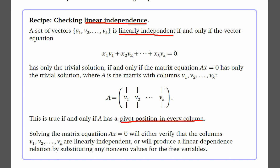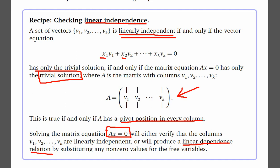If the only possible solution is the trivial solution, we have linear independence. If there is a free variable, there will be some other solution to the homogeneous equations, and we can find a dependence relation. That means there are values for x₁, x₂, up through xₖ where at least one xᵢ is non-zero — giving a linear dependence relation for one of the variables written as a linear combination of the others.